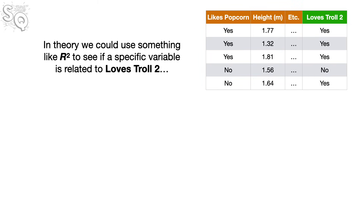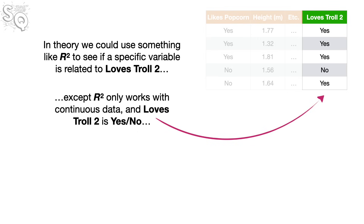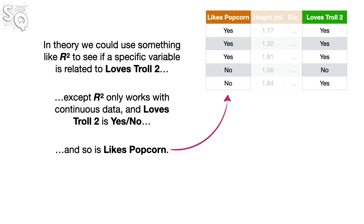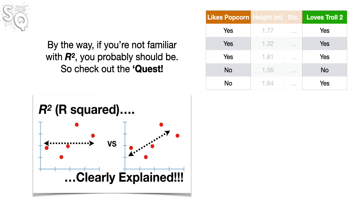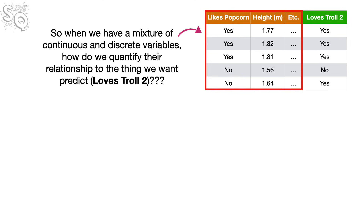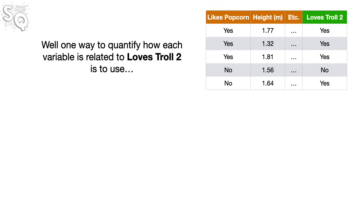In theory, we could use something like R-squared to see if a specific variable is related to loves Troll 2. Except R-squared only works with continuous data, and loves Troll 2 is yes or no — and so is likes popcorn. So when we have a mixture of continuous and discrete variables, how do we quantify their relationship to the thing we want to predict? One way is to use mutual information.